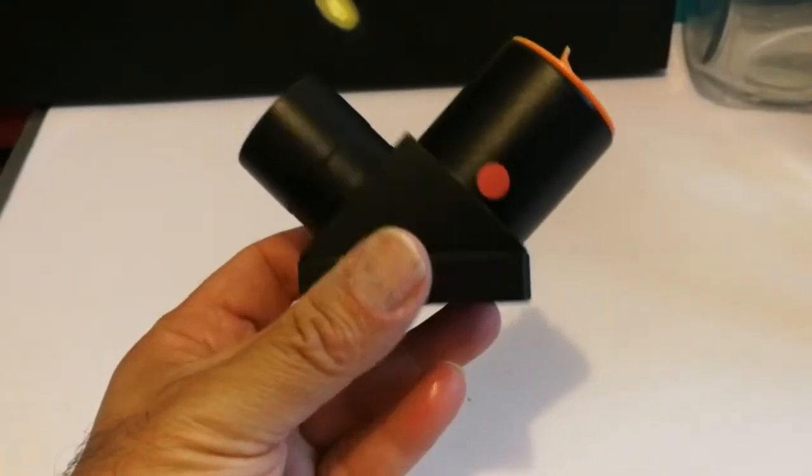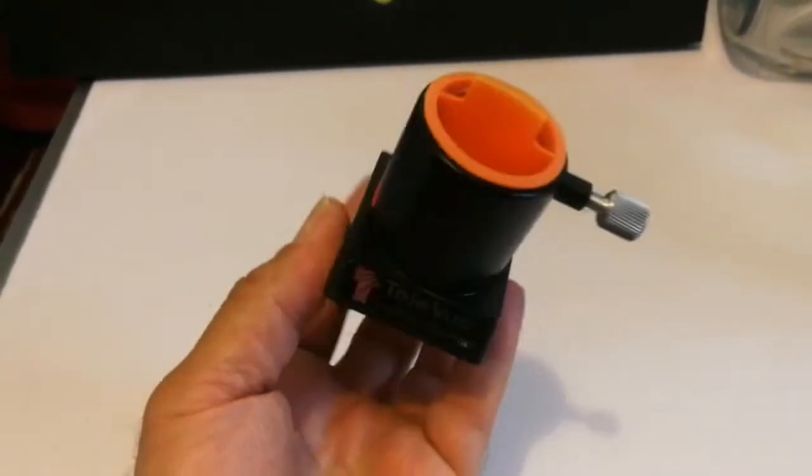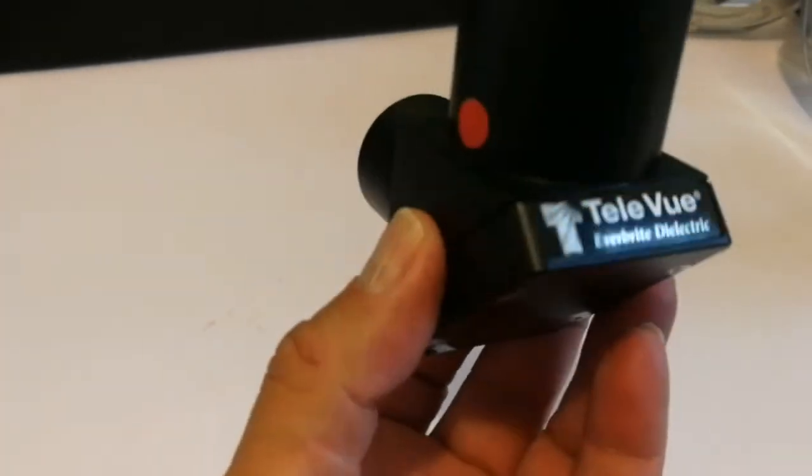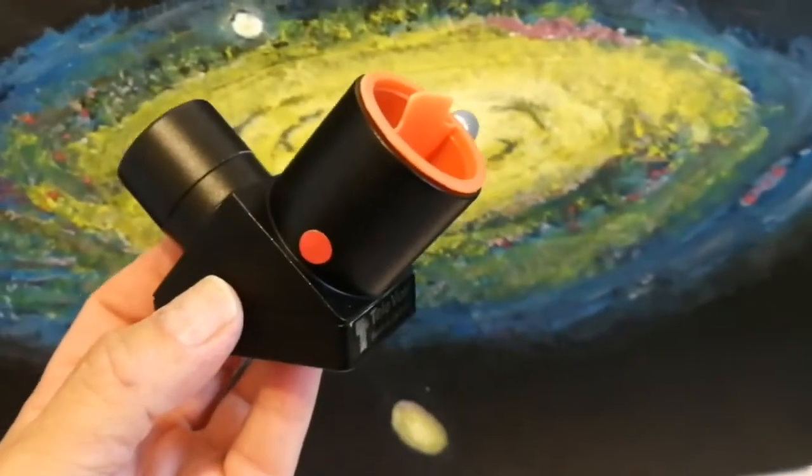Okay, this is the diagonal, one and a quarter inch diagonal. And oh, that's the Teleview Everbright dielectric Teleview. Oh, that's beautiful. It's one of the best diagonals you can get.